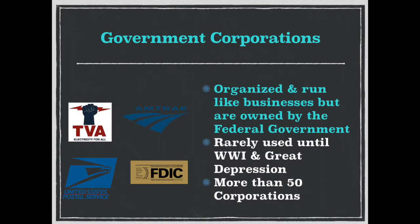Lastly, there are a number of independent agencies known as government corporations. There are 50 corporations within the executive branch subject to the president's direction and control, set up by Congress to carry out certain business-like activities. These government corporations were rarely used until World War I and the Great Depression. Well-known examples include the U.S. Postal Service, the Federal Deposit Insurance Corporation, the National Railroad Passenger Corporation, and the Tennessee Valley Authority.